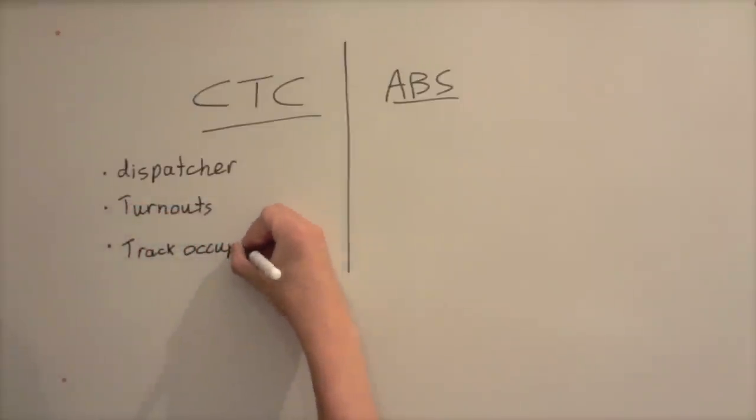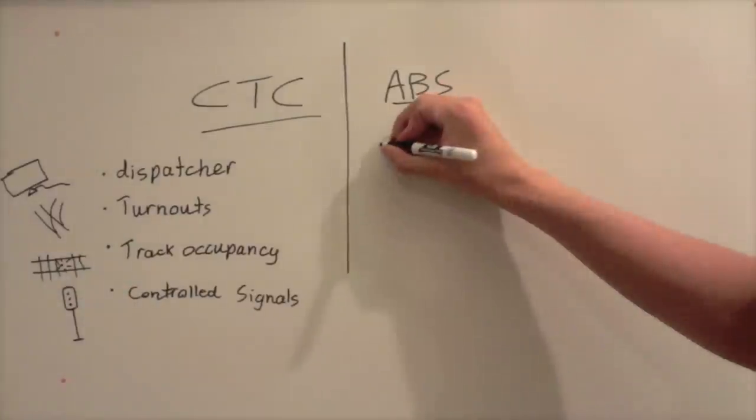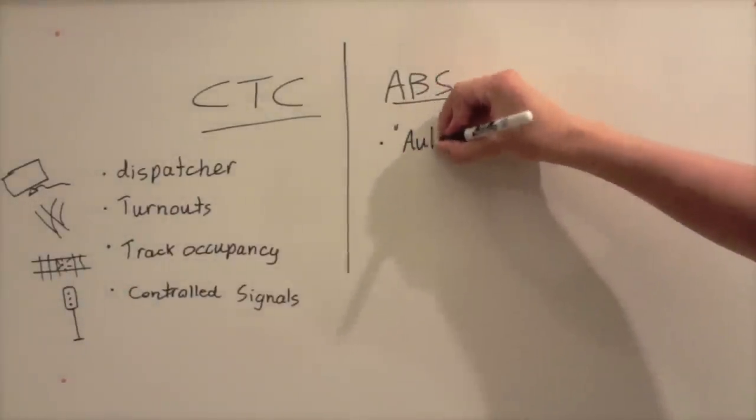CTC operates with a dispatcher who controls train movements. You have the turnouts which are also controlled by a dispatcher. Track occupancy is relayed to a computer screen on the dispatcher's panel. And then you also have the controlled signals. And that goes along with the controlled train movements where the dispatcher actually aligns the signals and tells trains when it's okay to move and organizes train movements.